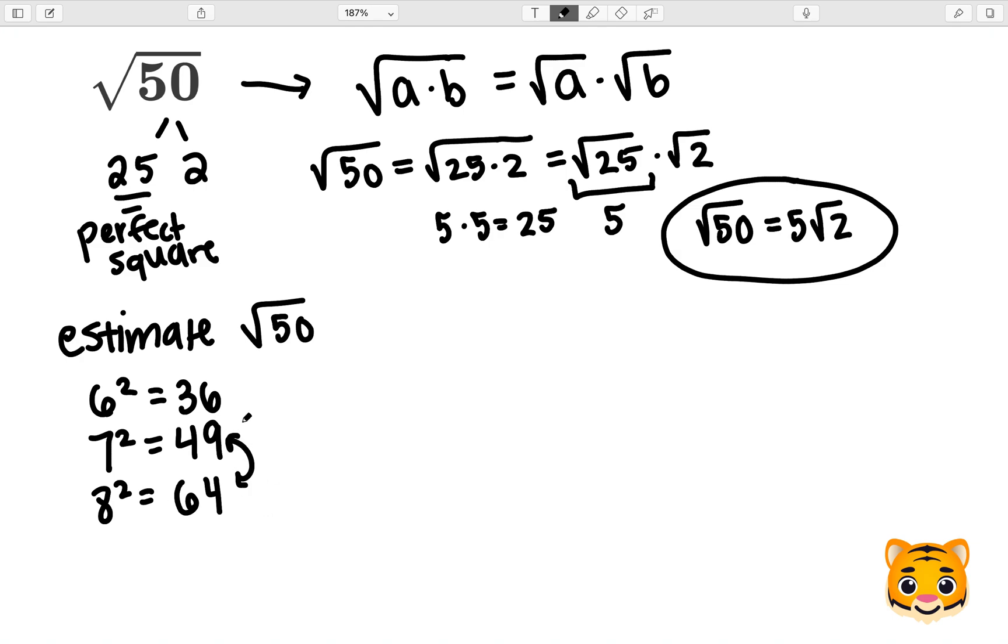Therefore, we will take a look at these square roots. So we know the square root of 49 will be less than the square root of 50, and that will be less than the square root of 64. We can replace the square root of 49 with 7 because 7 squared gives us 49, and then we can replace the square root of 64 with 8 because 8 squared gives us 64.